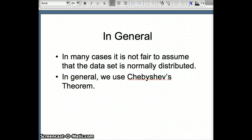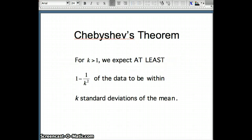But in general, it's not fair to assume data is normally distributed. In that case, we have to use Chebyshev's Theorem, which says the following: for k greater than 1, we expect at least 1 minus 1 over k squared of the data to be within k standard deviations of the mean.